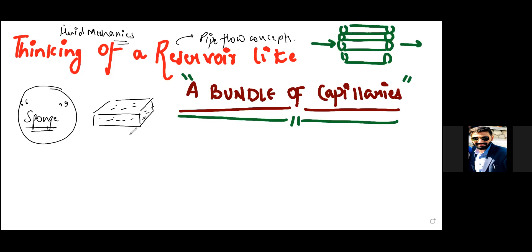What you need to see here is you need to imagine the sponge to be like a reservoir. But how is water getting inside this sponge? It is because there are a lot of channels inside the sponge. Exactly the same way, there are a lot of channels inside the reservoir.